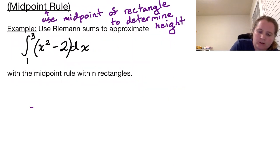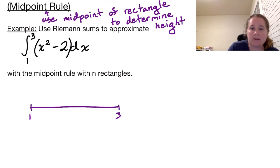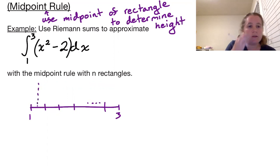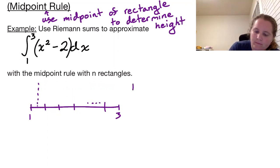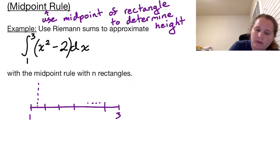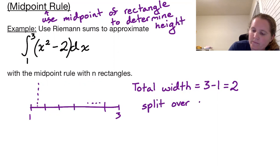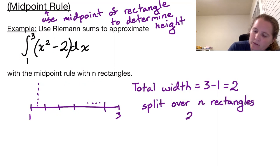We're going from 1 to 3, and we want to split this into a bunch of rectangles — sub-intervals — where the heights will be based off the midpoints. Our total width is 3 minus 1, or 2, and we're going to split that over n rectangles, giving us a width of 2 over n.